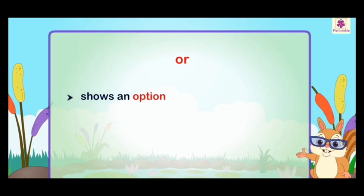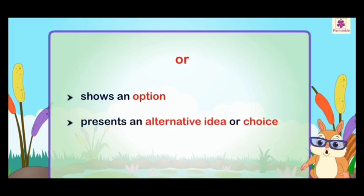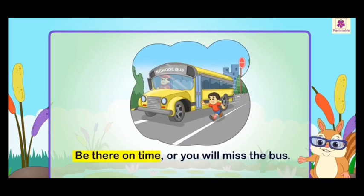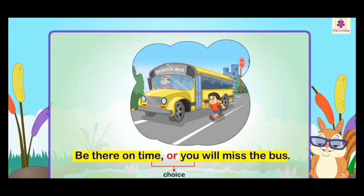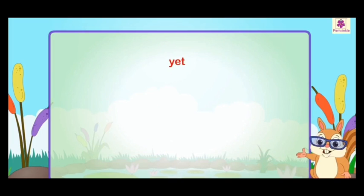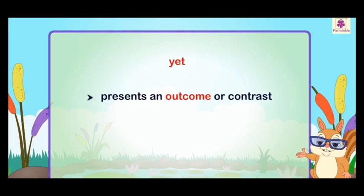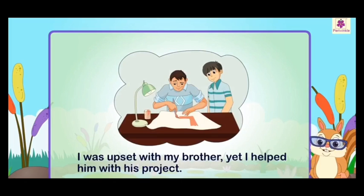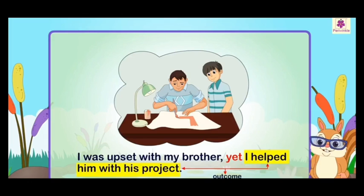"Or" shows an option or alternative choice. For example: "Be there on time, or you will miss the bus." "Yet" presents an outcome or contrast. For example: "I was upset with my brother, yet I helped him." Here, "yet" presents the outcome.